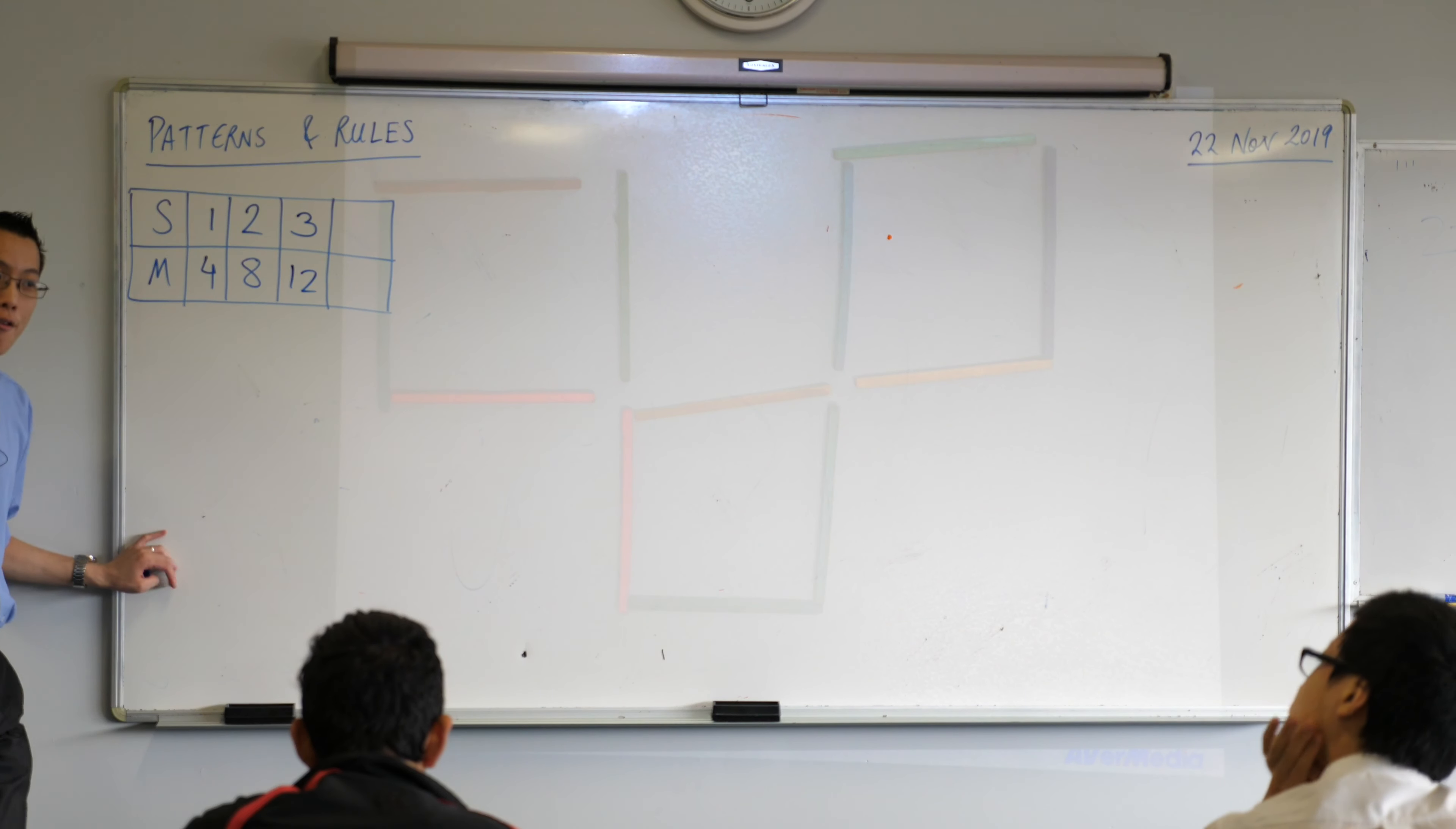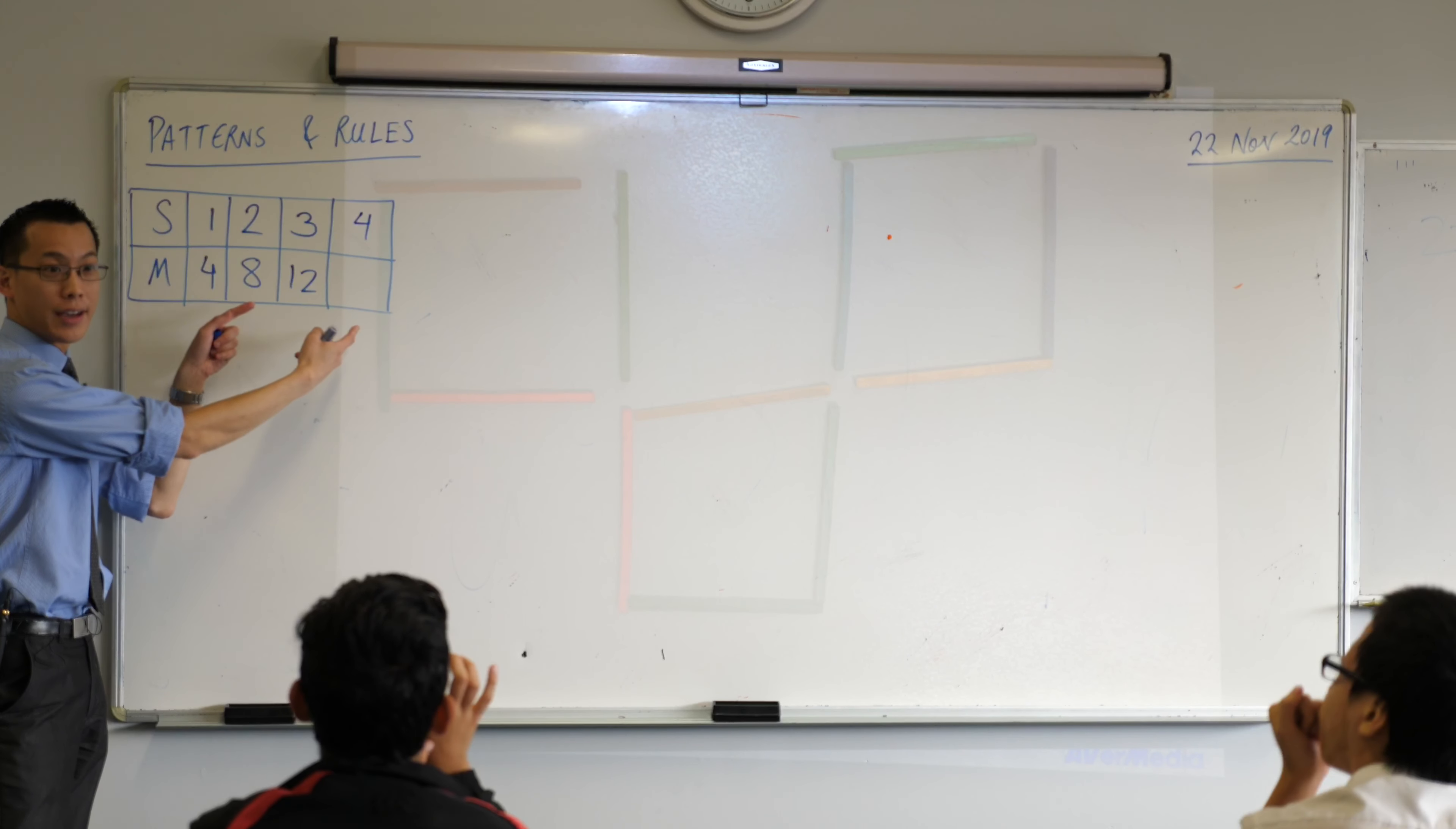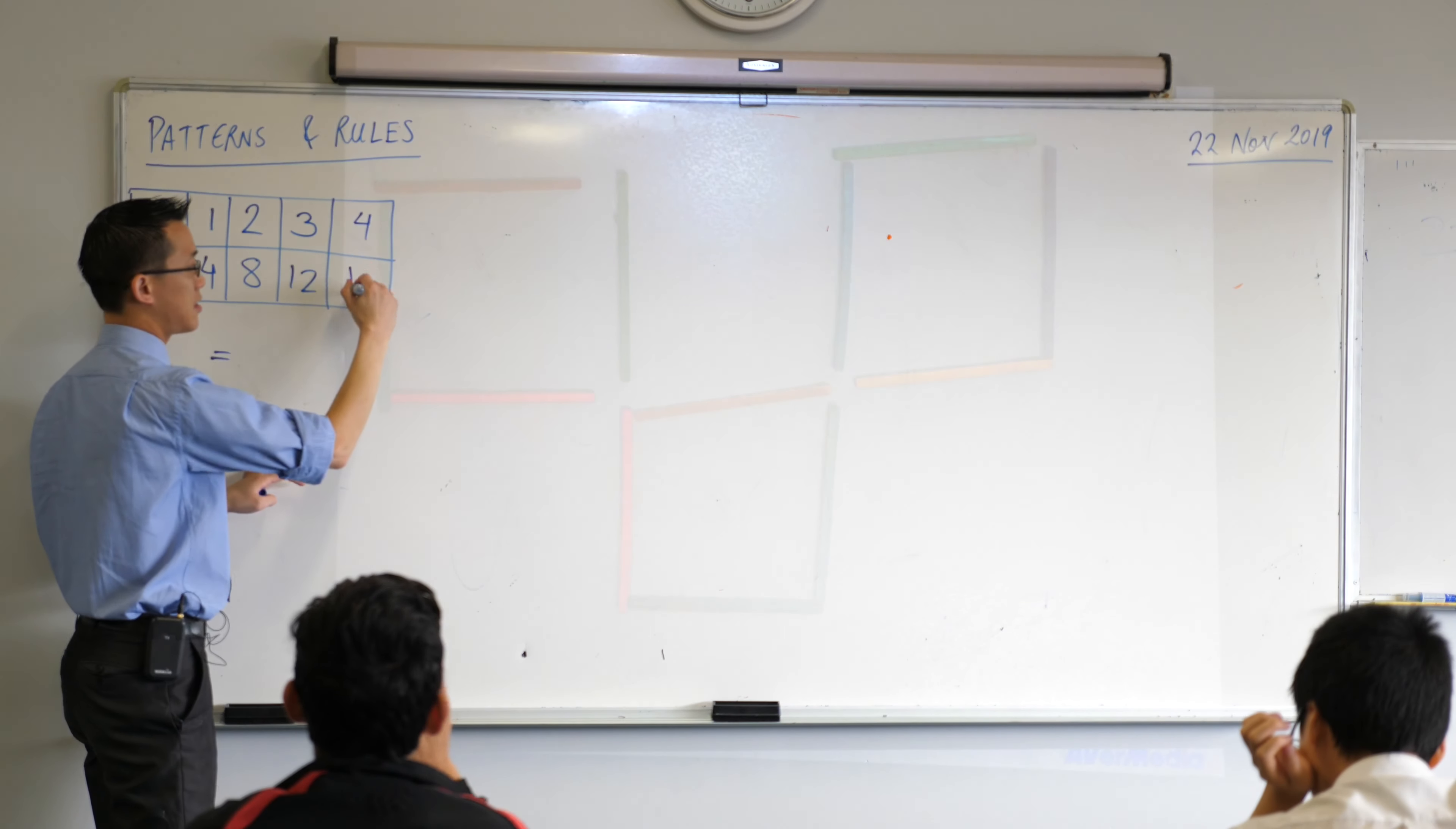Now from here we could do one of two things. We could either work out what you think the next shape will be without actually drawing it, or we could also create a relationship, a pattern, a rule that explains what's going on here. So maybe we'll do it in order. How many, without actually constructing it, how many matchsticks will I need if I add on shape number four? Sixteen.